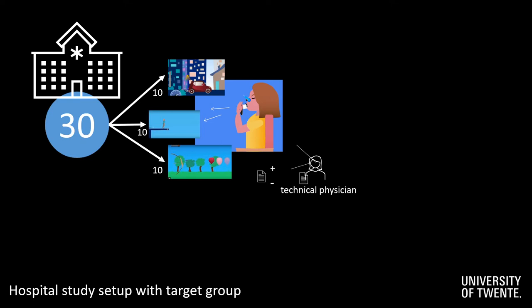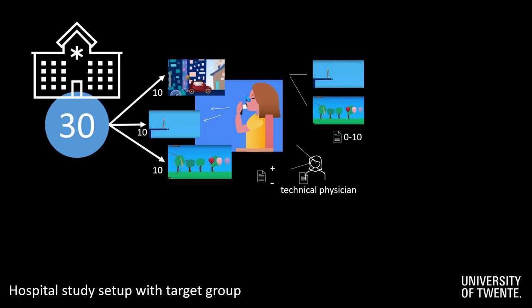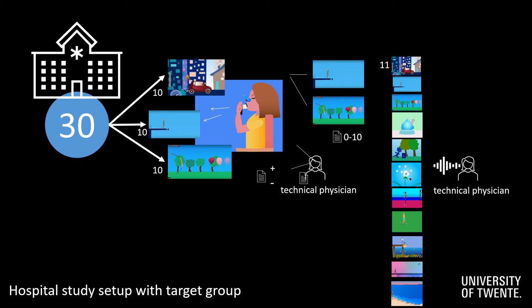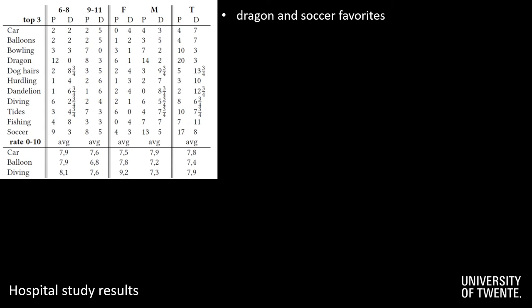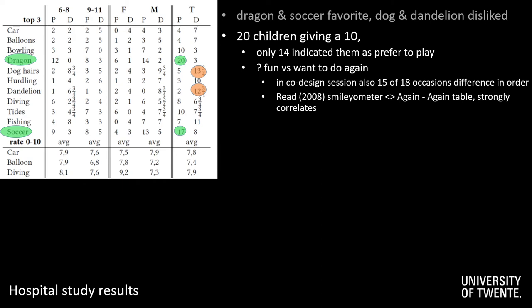We then showed them GIFs of the other metaphors, with all three rated on a scale from 0 to 10. The technical physician then explained all 11 metaphors, after which we asked which three they would prefer to play if they could, and three they would dislike the most. When looking at the results on preference, we saw that the dragon and soccer metaphor were the favorites, whereas the dog growing hair and blowing seeds on the dandelion were disliked most often. Interestingly, when looking at the ratings from the 20 children who gave a 10, only 14 indicated those games were also ones they would prefer to play, which might indicate there is a difference between fun and want to do again.